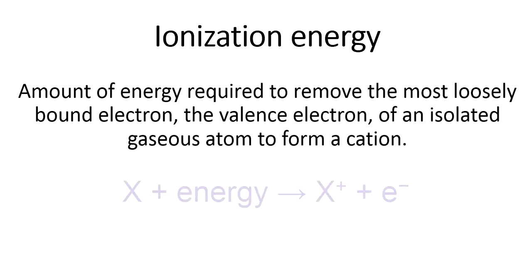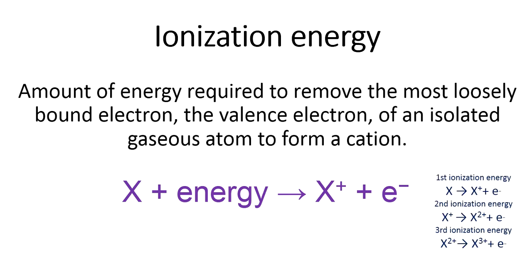It is like this: if a neutral atom X is given energy, which is ionization energy, to form X+ plus an electron. To remove the first loosely bound electron is called first ionization energy.